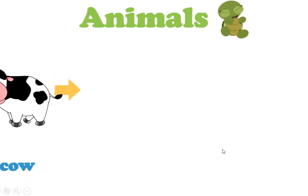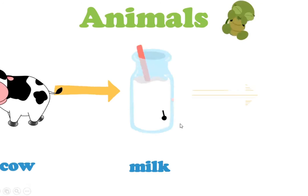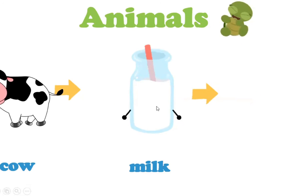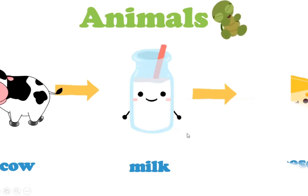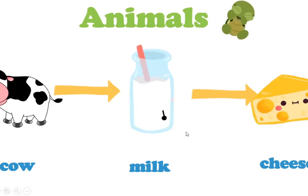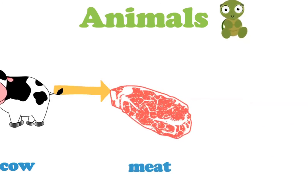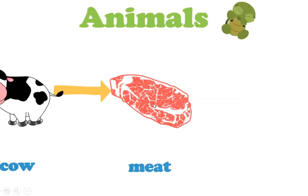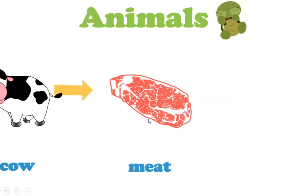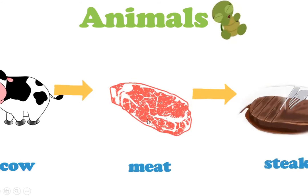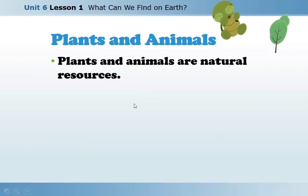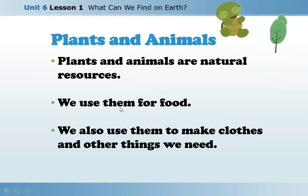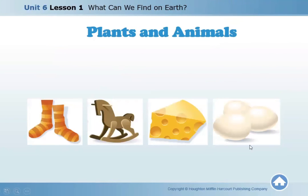Another animal we use as a natural resource is the cow. From the cow we get milk, which is very healthy, and cheese — yummy cheese. We also get meat from the cow. Plants and animals are natural resources. We use them for food and also to make clothes and other things we need.